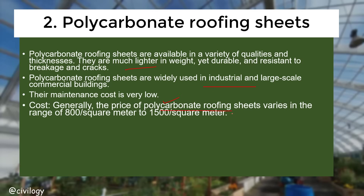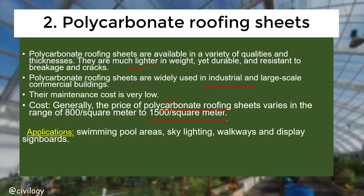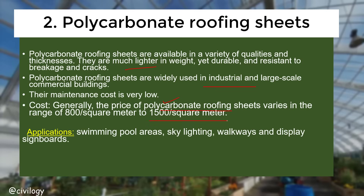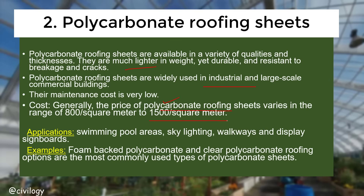The price of polycarbonate roofing sheets generally varies between 800 to 1500 per square meter. Applications include swimming pool areas, skylighting, walkways, and display signboards. The most commonly used types are foam-backed polycarbonate and clear polycarbonate — clear carbonate is transparent while foam-backed carbonate is translucent.